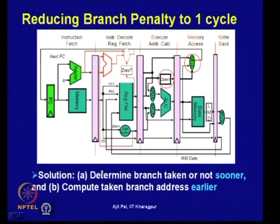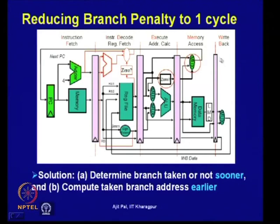These two solutions can be easily accomplished with additional hardware, reducing the branch penalty to one cycle. Going forward, we shall assume this hardware change has been made, and our branch penalty is now one cycle.